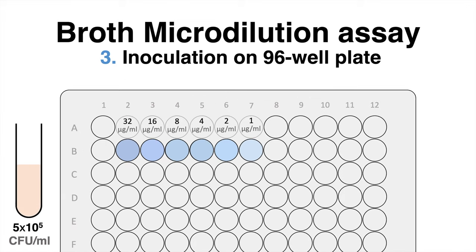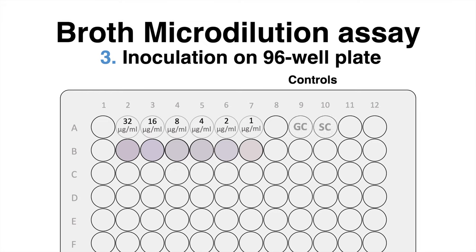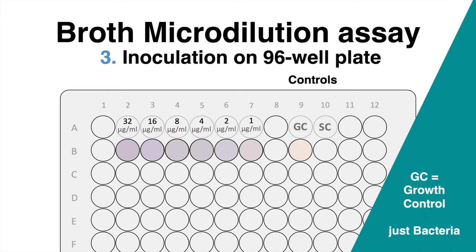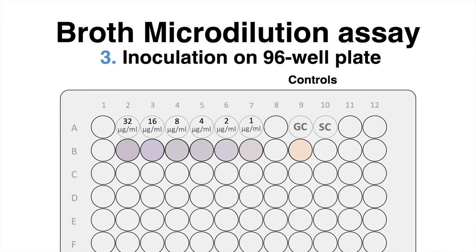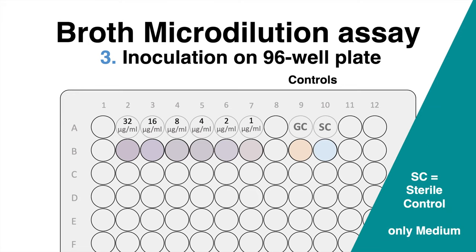For the inoculation, we make sure to add the same number of bacteria to each well. Apart from samples, two controls are used for this assay. The growth control contains no drug but just bacteria and is expected to show how bacteria grow without the compound. The second one, the sterile control, does not contain bacteria — it is only medium — and is expected to not show any bacterial growth after incubation.